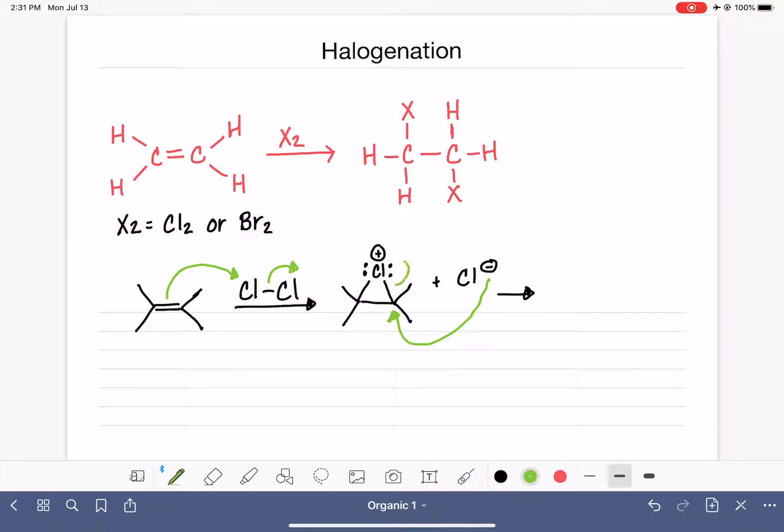When that second chlorine comes in and attacks, it breaks the carbon-chlorine bond. And this gives us a product that looks like this. It's going to have this type of stereochemistry. The chloronium chlorine is sticking in that same direction, and the new chlorine that we've brought in, which came in from the underside, is on the opposite side of what used to be the carbon-carbon double bond.